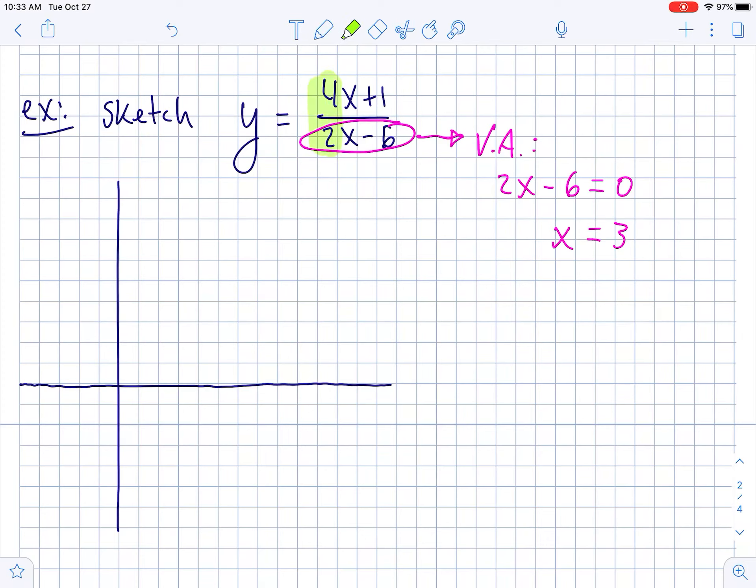The horizontal asymptote is going to be 4 over 2 because it's the ratio of the leading coefficient. So, the horizontal asymptote is y is equal to 4 over 2 or y is equal to 2. So if I start to sketch this, x is equal to 3 is the vertical. So, it's like vertical asymptote at x is equal to 3. Horizontal at y is equal to 2.